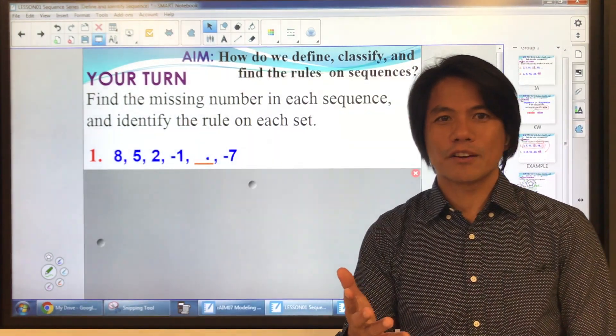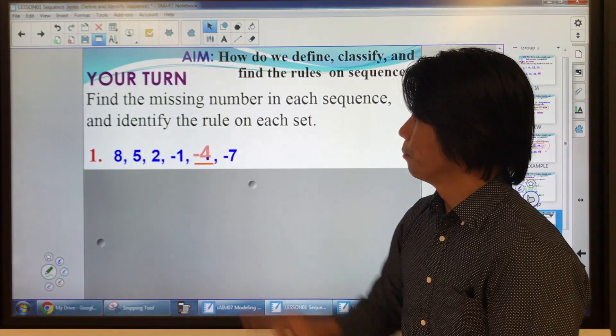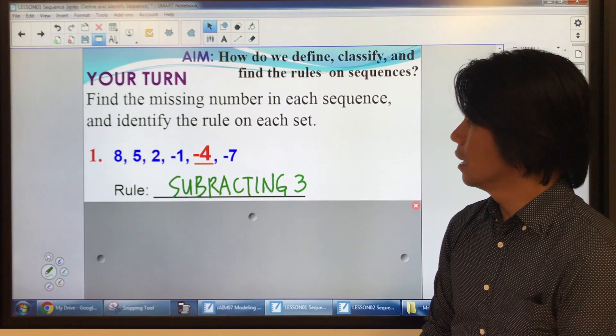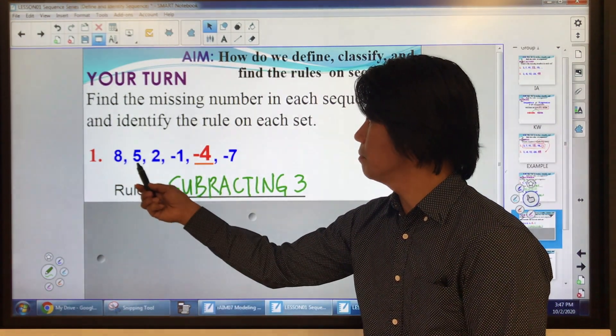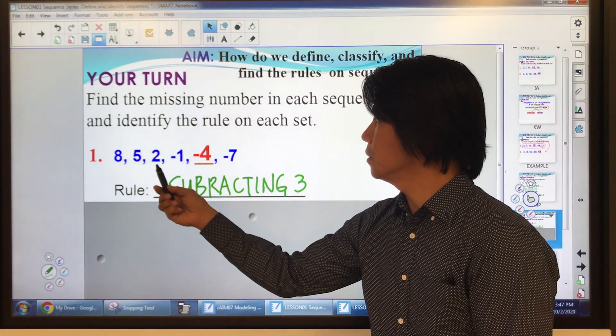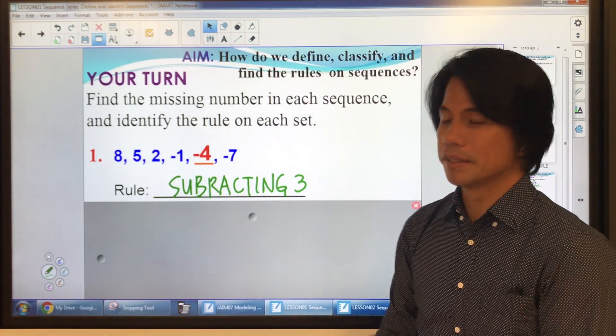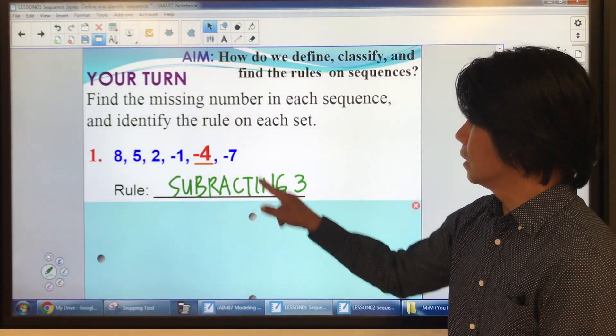All right, let's check your answer. What is the missing number here? It's negative four. And the rule? Subtracting three. Let's see. Eight minus three is five. Minus three is two. Minus three, negative one. Minus three, negative four. Minus three, negative seven. And it's a finite sequence.